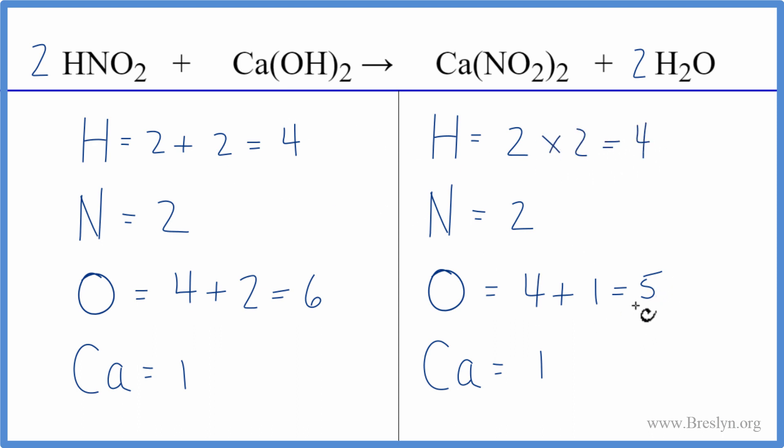And let's update the oxygens. We have the two times two. That gives us the four plus one times two. And we end up with six oxygen atoms. And everything's the same on each side. We're done. This equation is balanced.